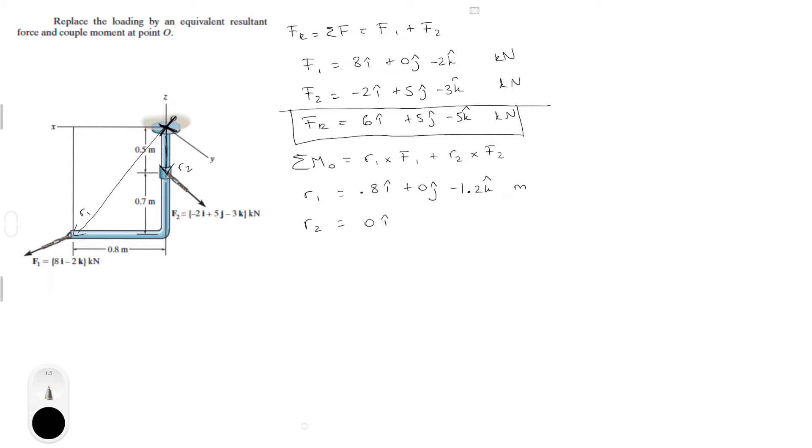R2 is 0 on the i plus 0 on the j minus 0.5 in the k, also in meters. So now we got to find the cross products.